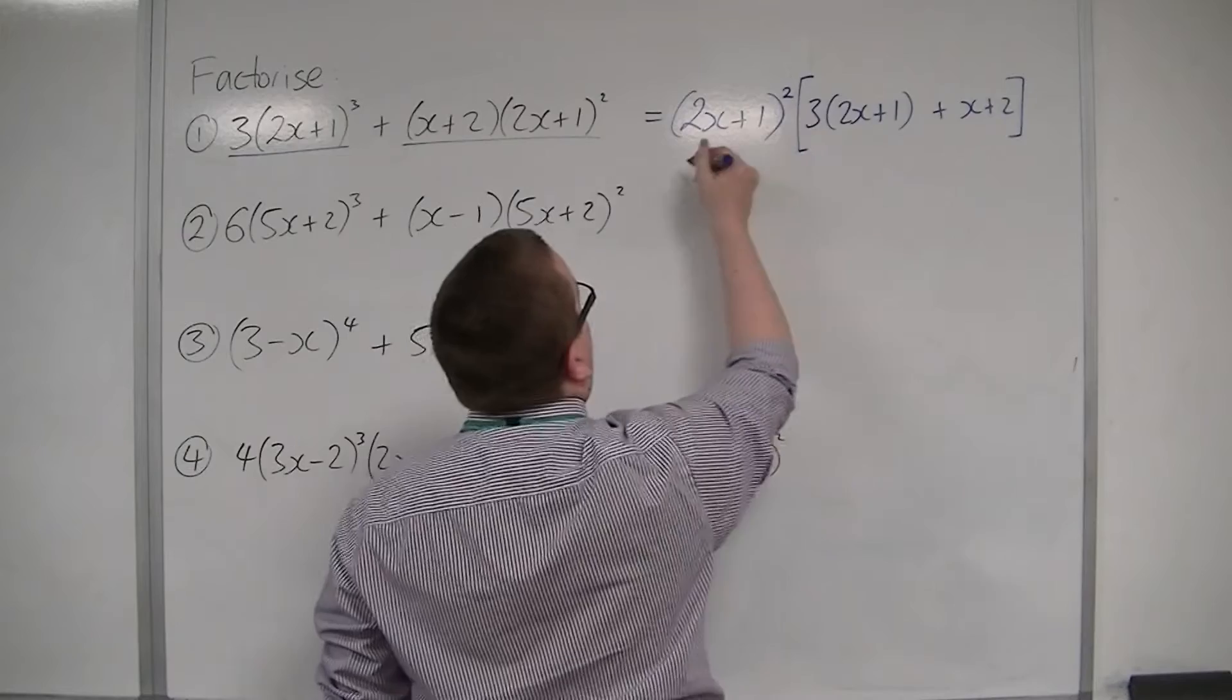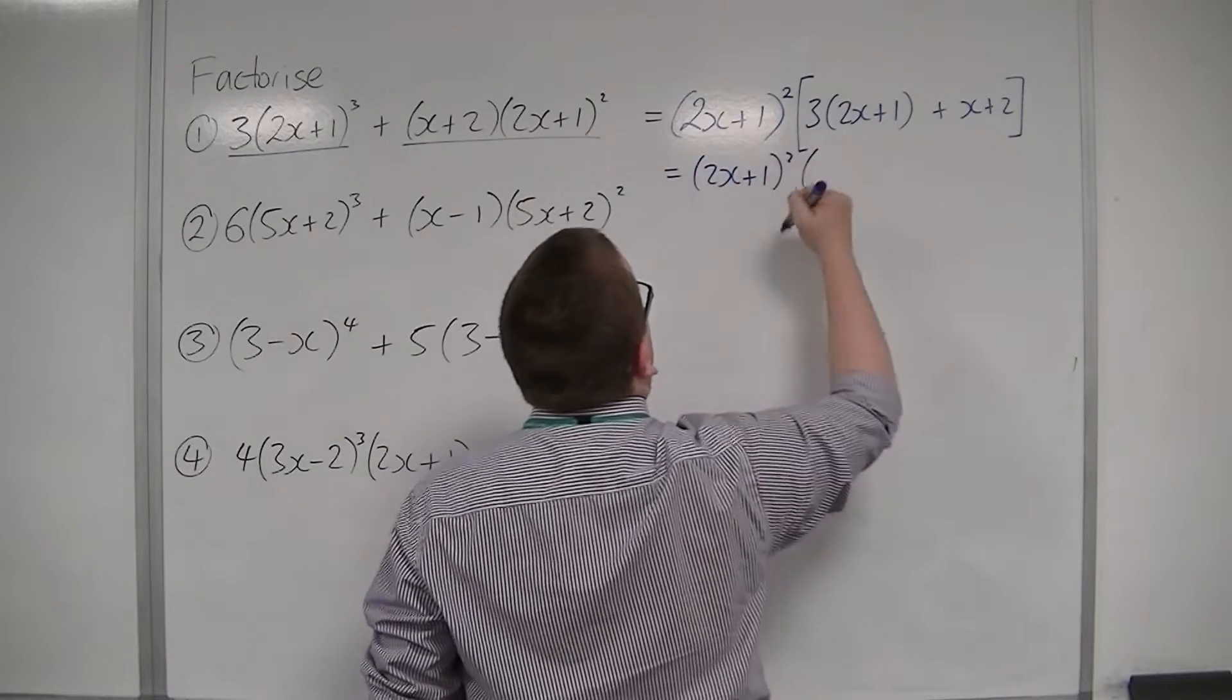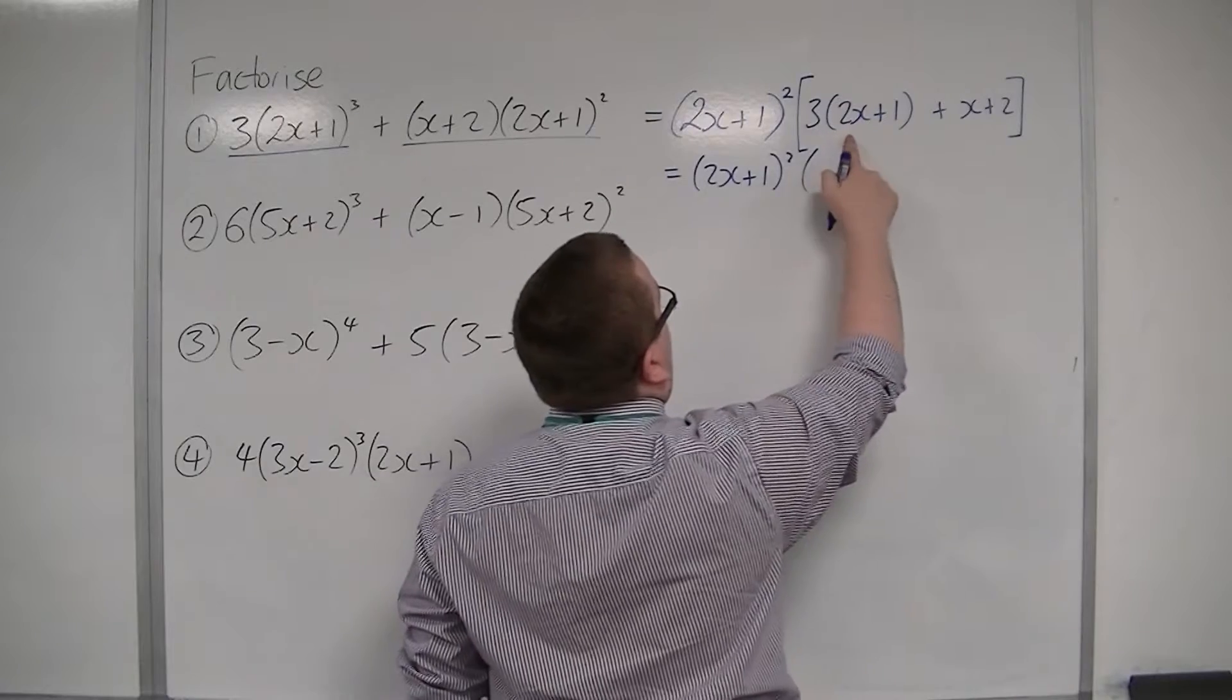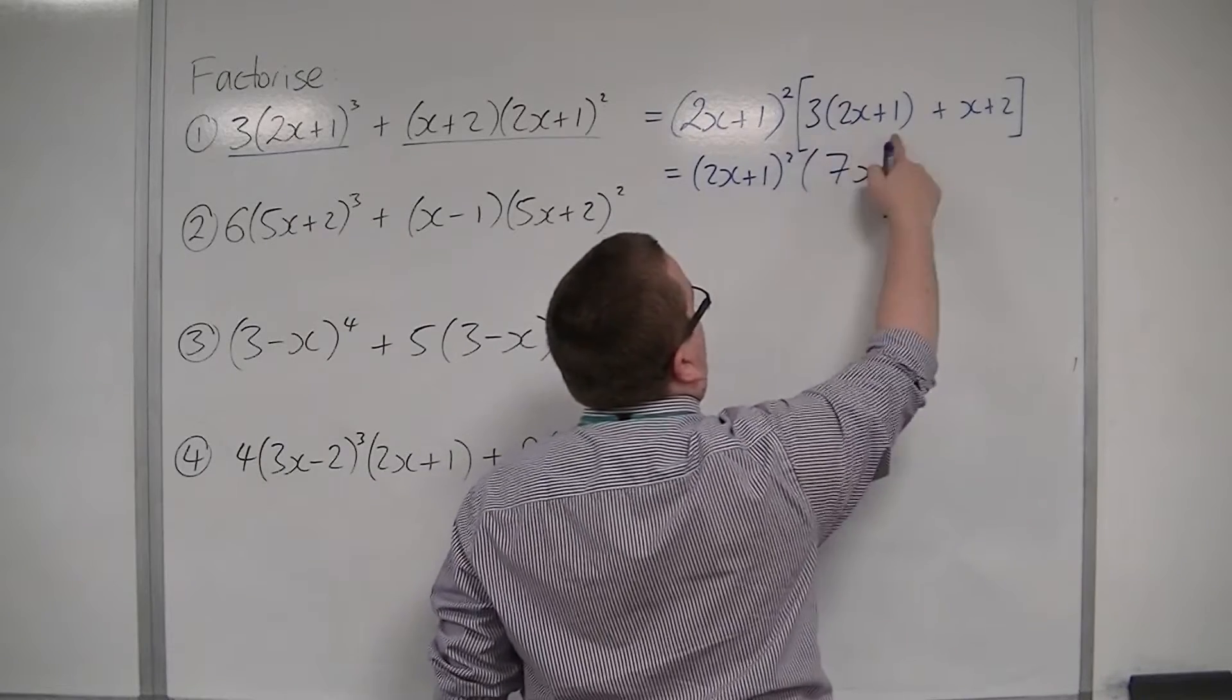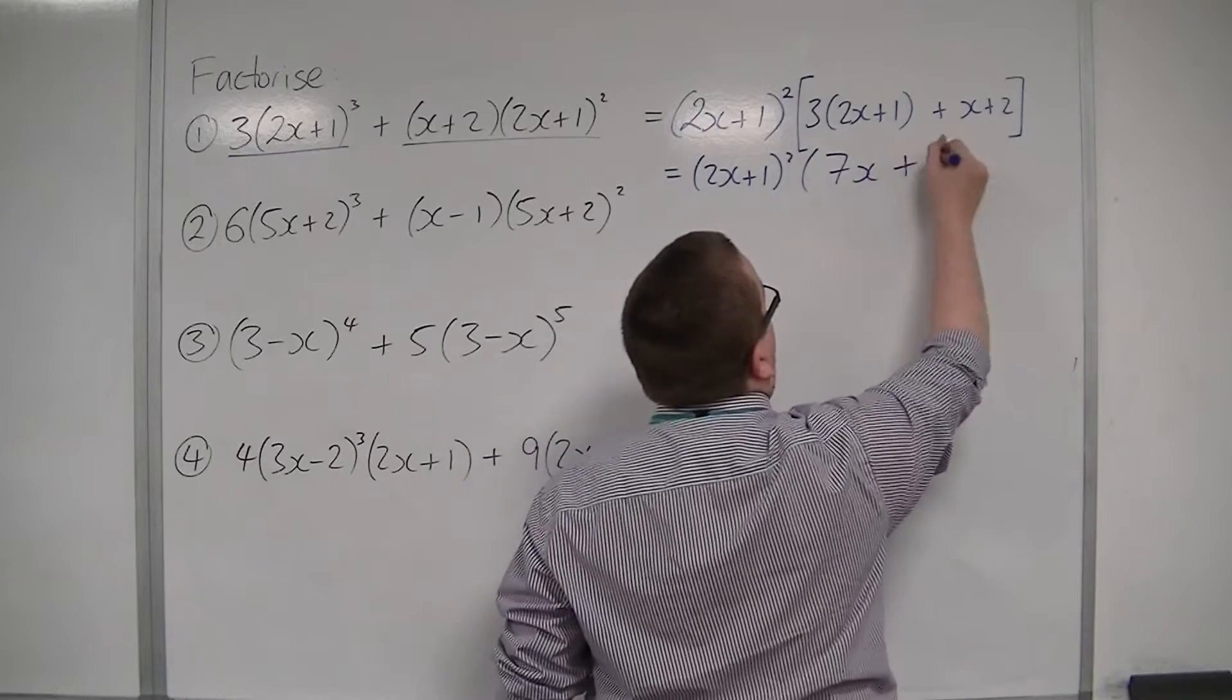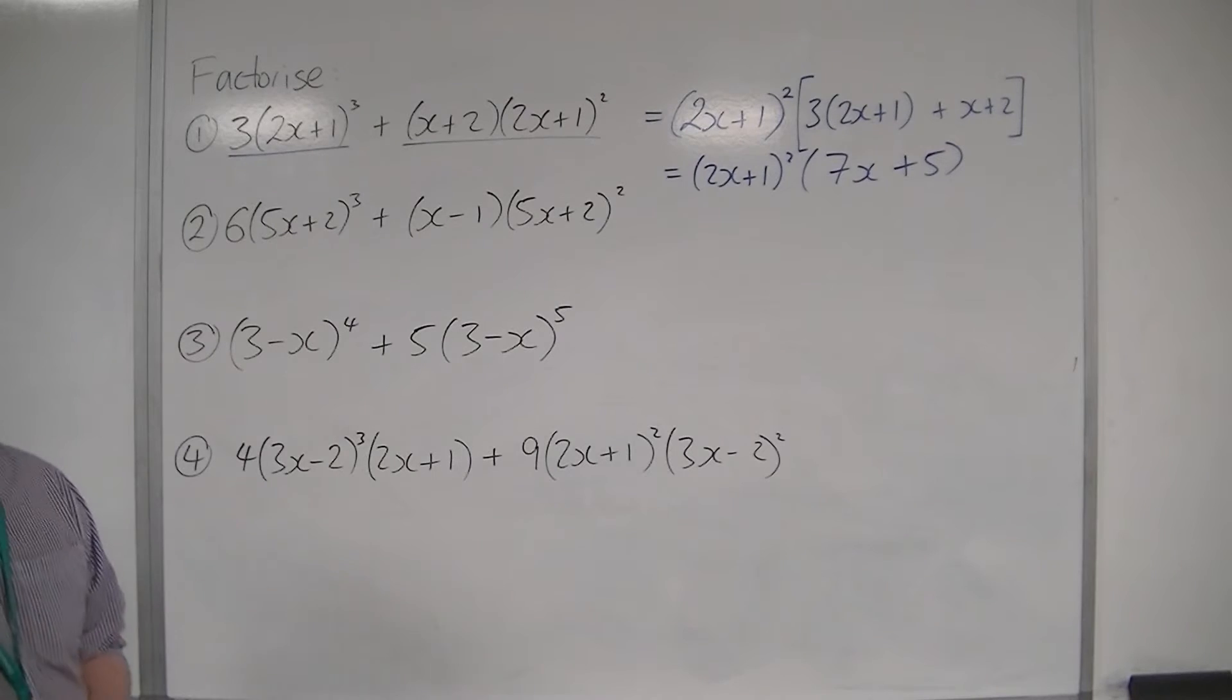And then, you want to simplify this. So, this will be 2x plus 1 all squared. And here, we're going to have three lots of 2x is 6x plus x there, so that's 7x. Three lots of 1 is 3 plus the 2 is 5. So, we're going to have 2x plus 1 all squared times 7x plus 5.